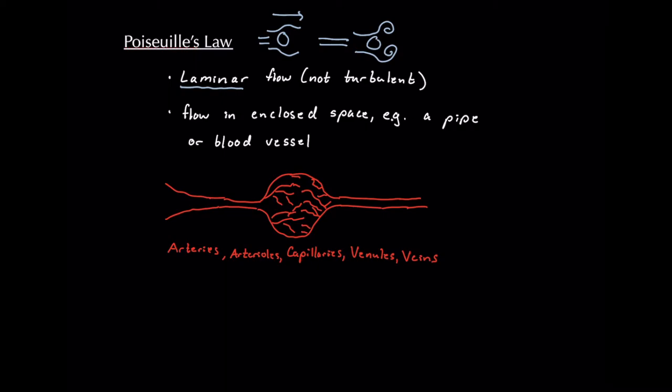Poiseuille's law also requires another assumption, of course, that flow's occurring in an enclosed space or a closed system, for example a pipe or a blood vessel. And I've included here just the basic outline of blood vessels that you should be familiar with, really more of a biology concept but worth going over. We have our arteries which go into arterioles, which go into capillaries where most of the tissue exchange of O2 and CO2 is going to occur. And then these capillaries run into venules which eventually run into veins which go back to our heart.